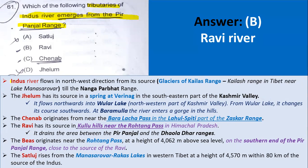The Indus River flows in a north-west direction from its source at the glaciers of Kailash Range in Tibet, near Lake Mansarovar. The Jhelam has its source from a spring at Verinag in the south-eastern part of the Kashmir Valley. It flows northwards into Wular Lake, that is the north-western part of the Kashmir Valley.